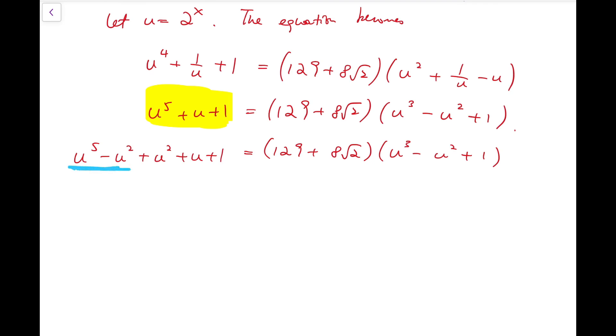Then, for the first bit, which is u to the 5 minus u squared, that is u squared times u cubed minus 1 plus u squared plus u plus 1.